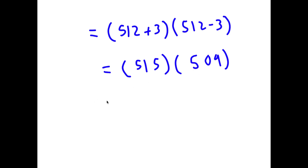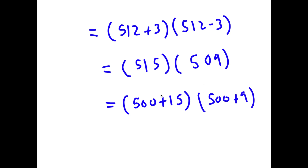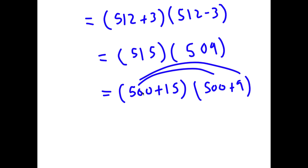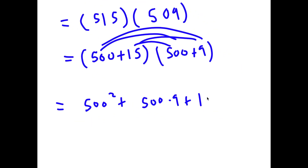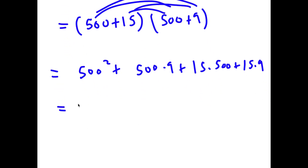First off, 515 I'm going to write as 500 plus 15, and the reason I did this is because it's easy to multiply multiples of 100. So 509 I'm also going to write as 500 plus 9. Now if we cross multiply, I'm multiplying 500 with these terms. I have 500 times 500, which is 500 squared, plus 500 times 9, plus 15 times 500, plus 15 times 9.